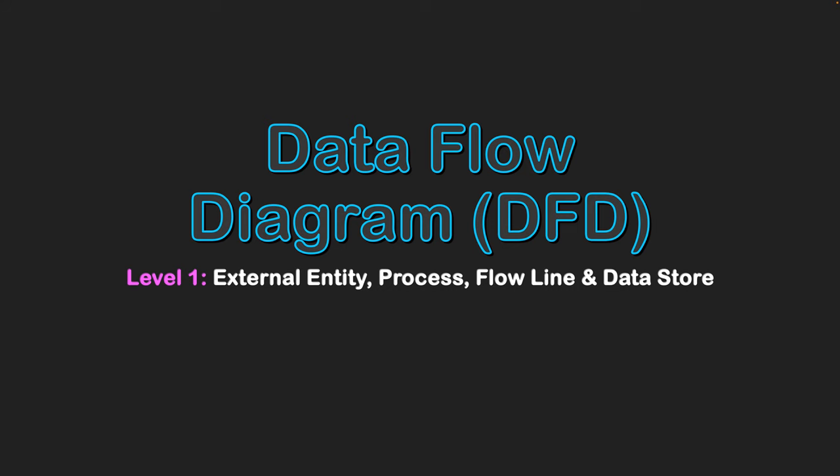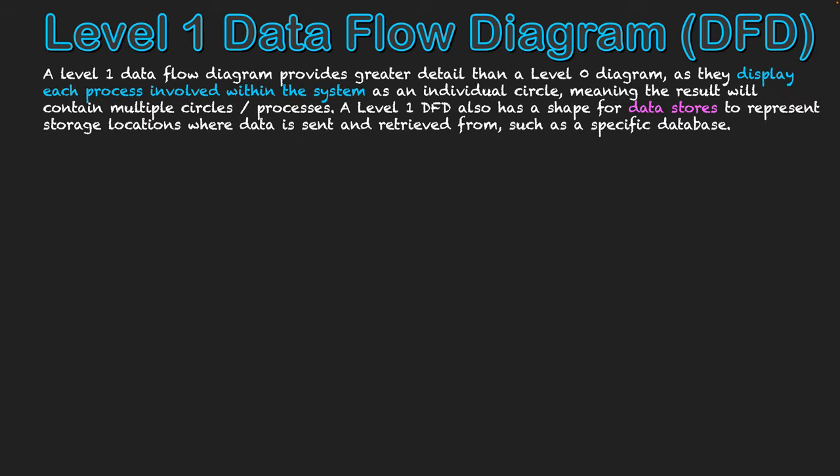Data flow diagram, DFD level one. This might be self-explanatory, but a level one data flow diagram provides greater detail than a level zero diagram, as they display each process involved with the system as an individual circle. A level zero had one circle representing the whole system; now we're breaking it up into multiple circles to represent the sub-processes of a system.